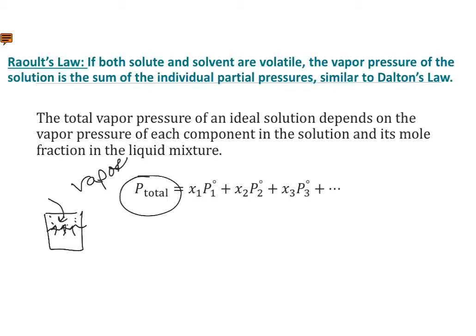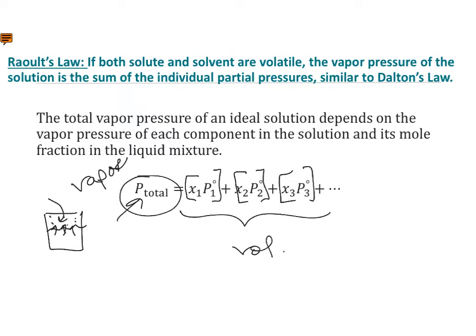Raoult's Law says the total vapor pressure of a solution is, similar to Dalton's Law, the sum of the pressure from each volatile component of the solution. If there's a non-volatile component, it will not contribute to the vapor pressure. This applies only to volatile components of a solution, which is typically the solvent. Even water is volatile — any liquid that you leave out for a day or days and it evaporates has some volatility.